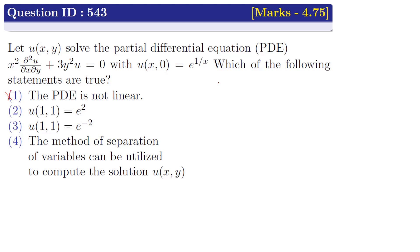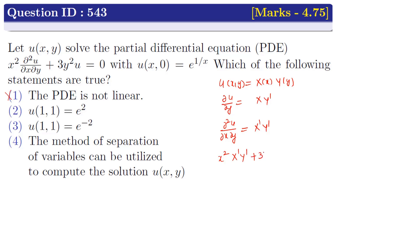Now we discuss Option 4. Let us assume u(x,y) = X(x)·Y(y) as the solution of the given differential equation. Then ∂u/∂y = X·Y′, and ∂²u/∂x∂y = X′·Y′. Substituting into the PDE: x²·X′·Y′ + 3y²·X·Y = 0. This implies x²·X′·Y′ = −3y²·X·Y. Separating variables: (x²·X′)/X = (−3y²·Y)/Y′ = k, a constant.